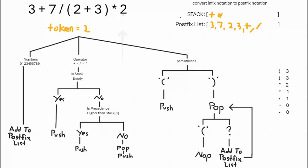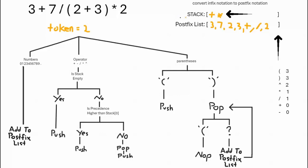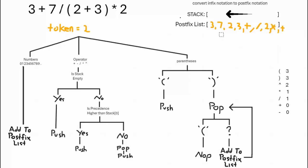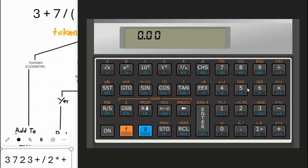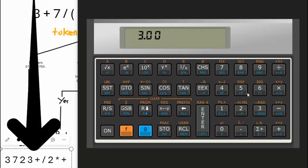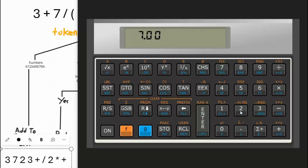The last element in the expression is two — it's a number, add it to the postfix list. We're done with the expression. We check the stack — it's not empty, so we pop each element: pop multiply, then pop addition. There is our final postfix expression.